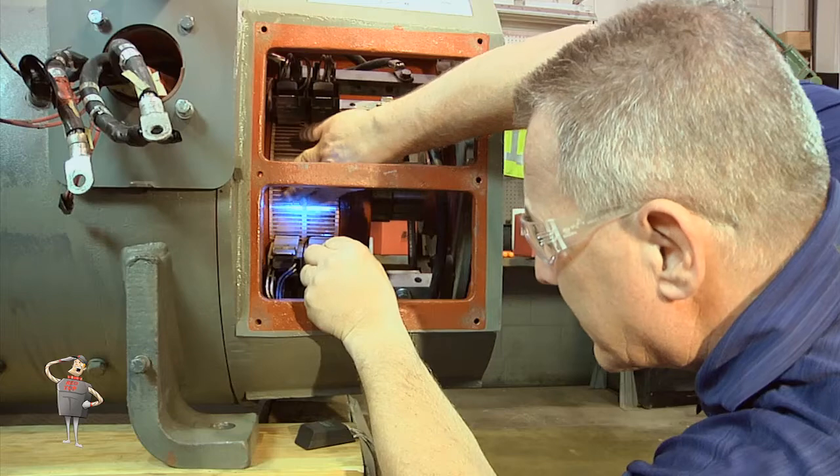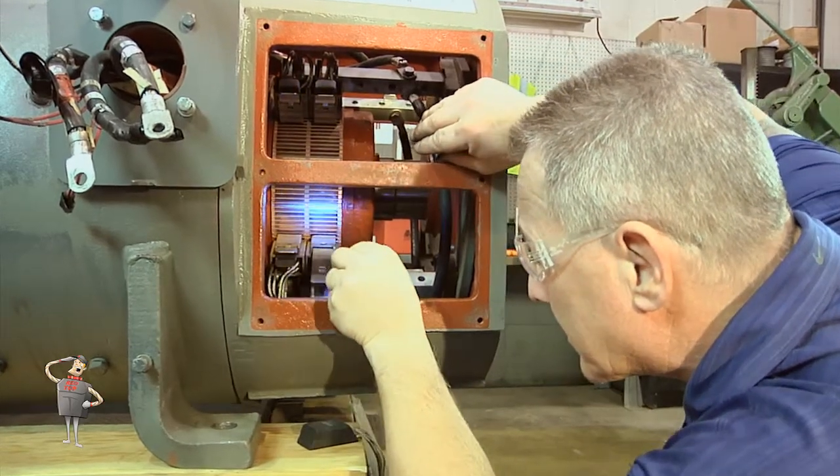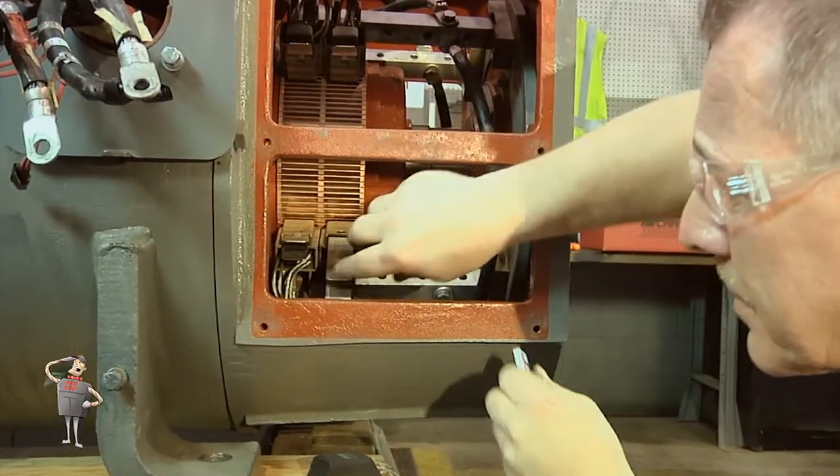After inspecting the brushes, also inspect the contact surface for unusual conditions as described in the Helwig carbon commutator condition guide.